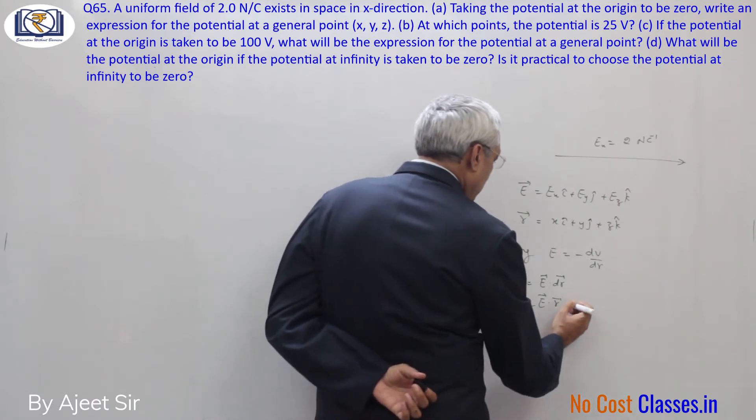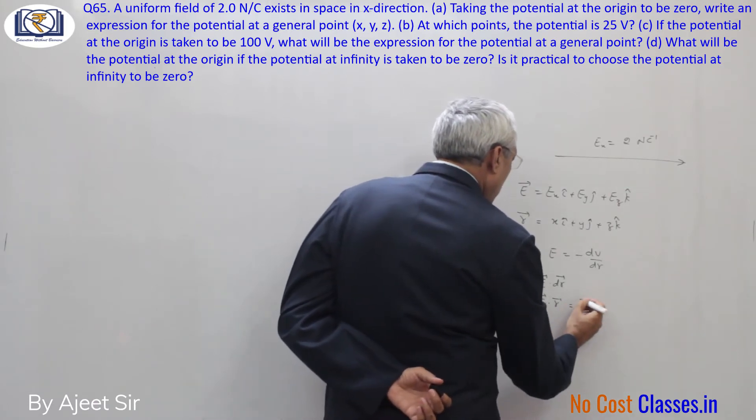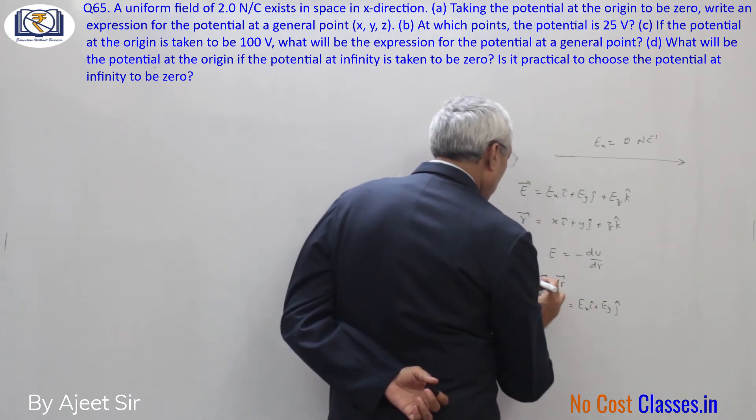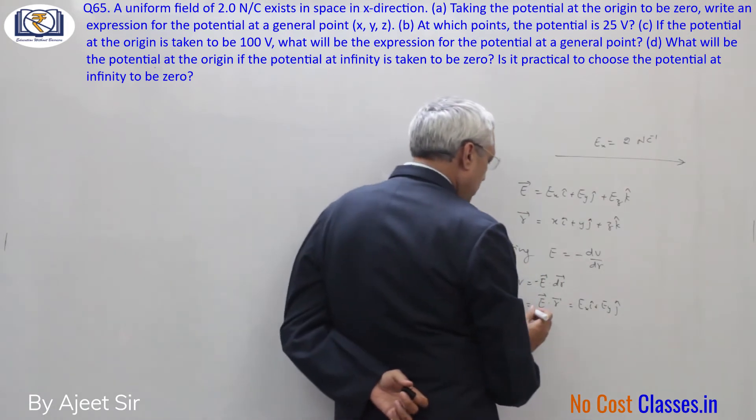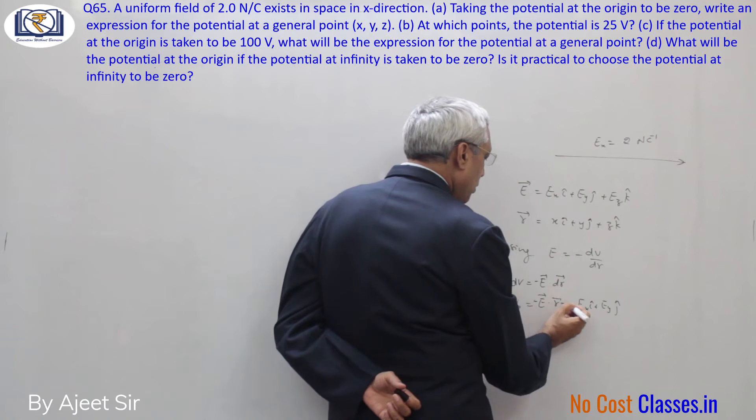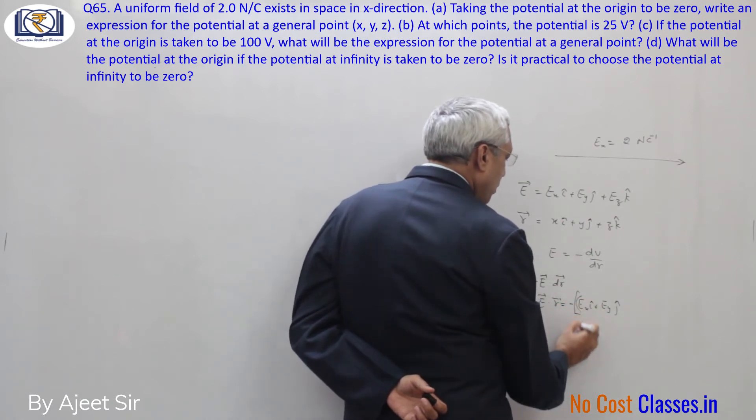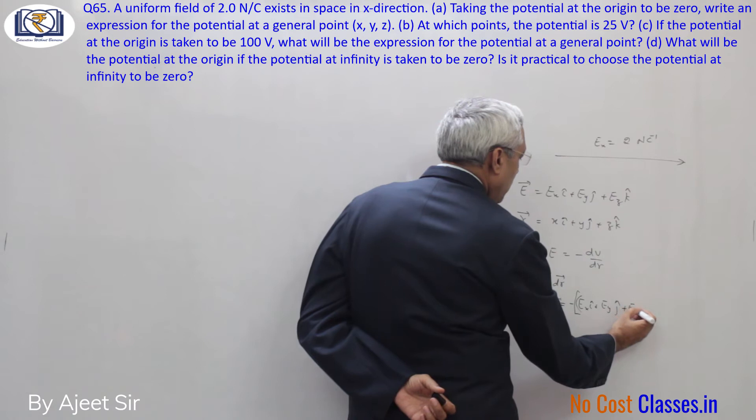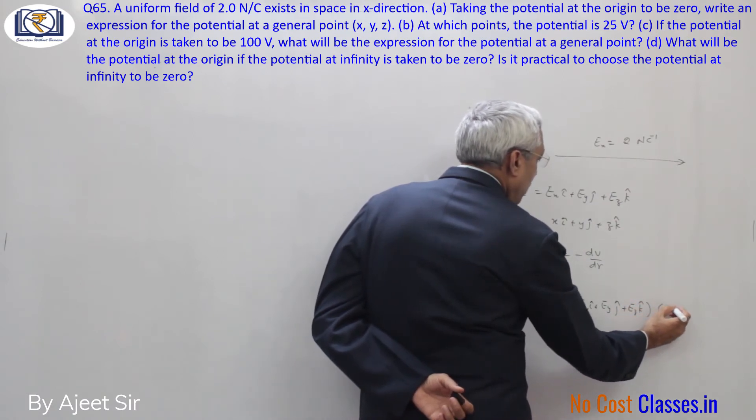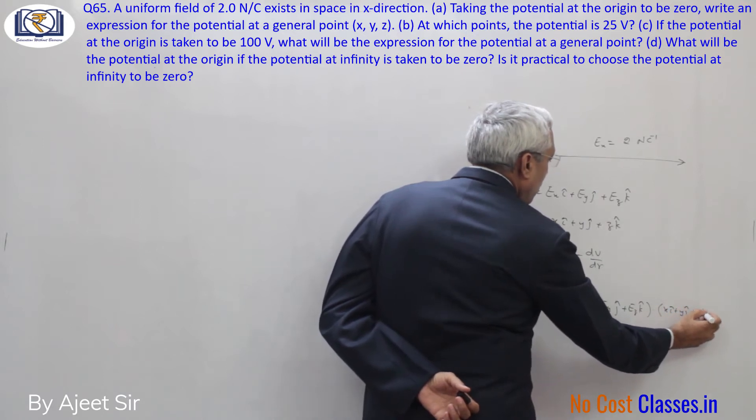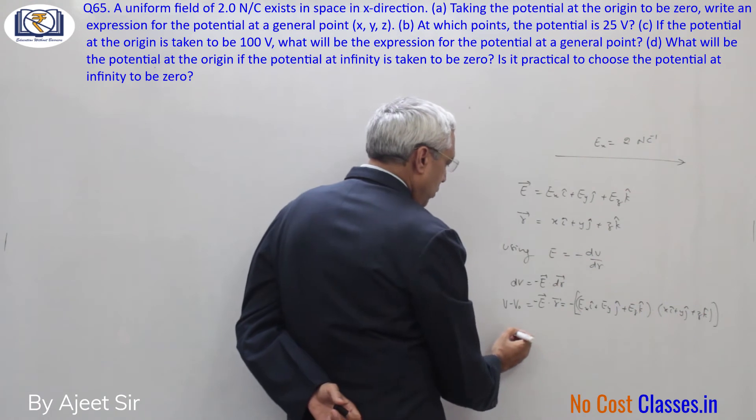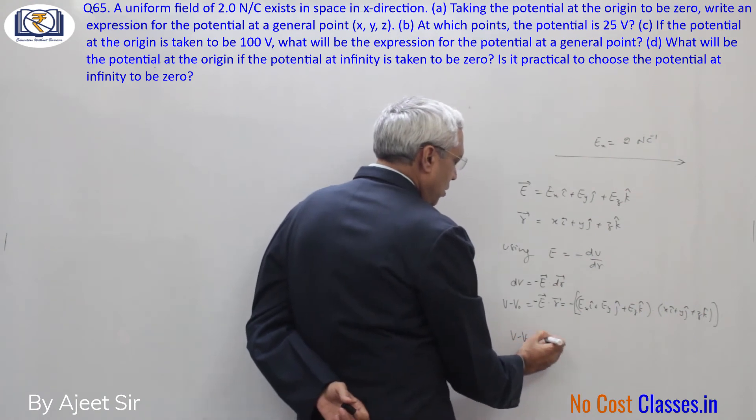I can write V minus V naught for the origin. And here you see Ex i plus Ey j - there will be a minus sign because of the negative sign here. Plus Ez k dot x i plus y j plus z k.